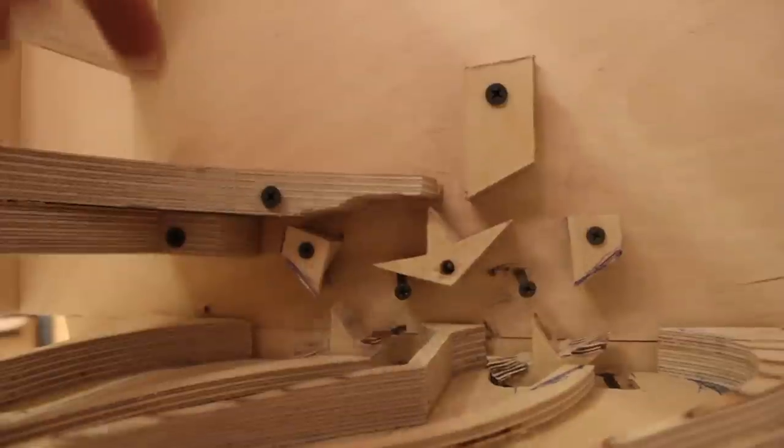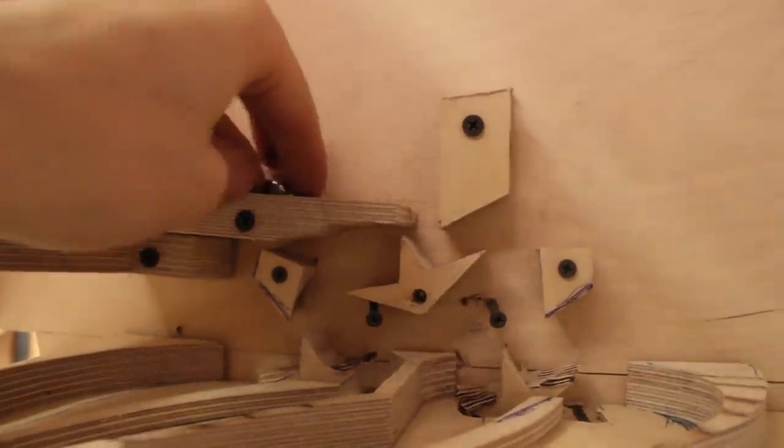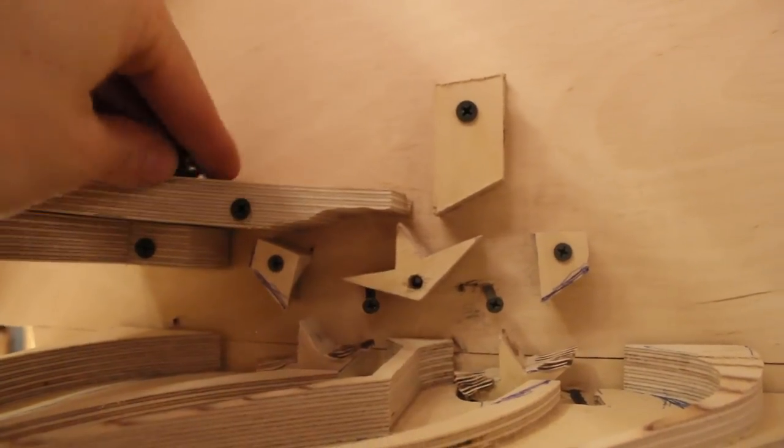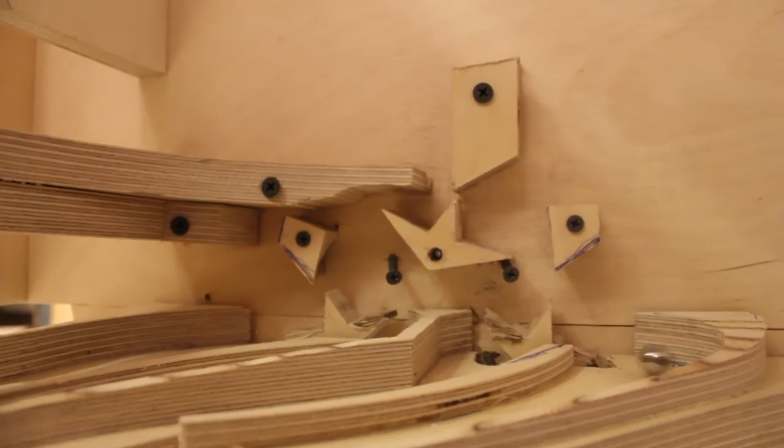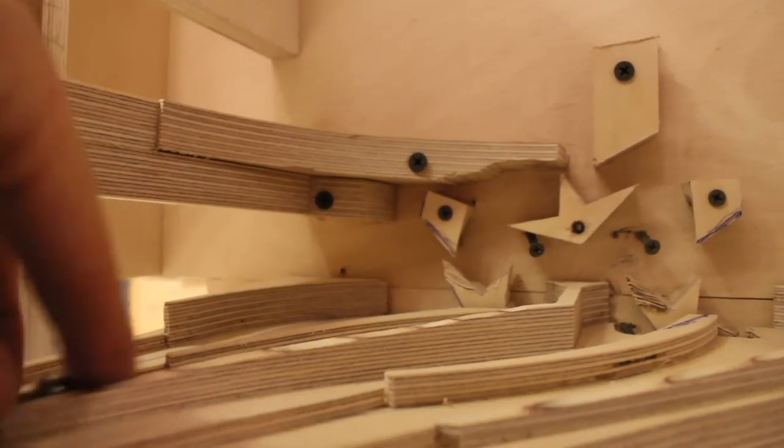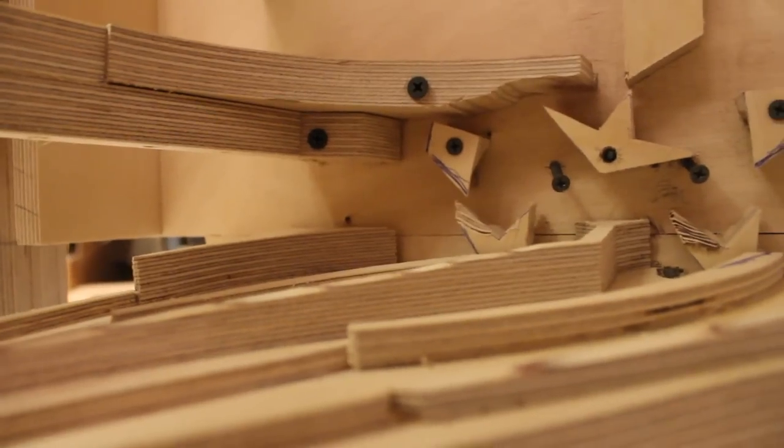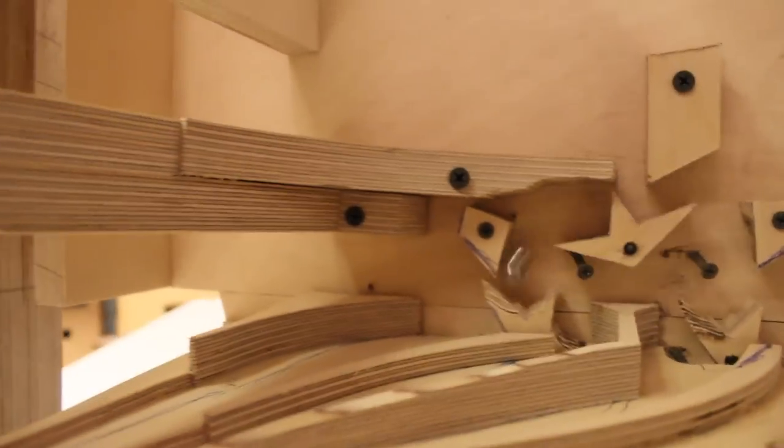This divide by four flip-flop mechanism will separate a continuous line of marbles into four. So the first marble will hit number four, second one will hit number two, third one will hit number three, and fourth one will hit number one.